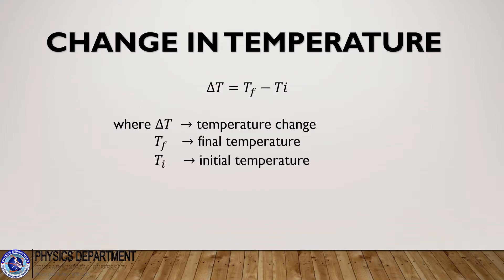Next, let's talk about change in temperature. When a body cools off or becomes hotter, then there will be a temperature change. And we denote temperature change as delta T, where delta T = T_f minus T_i, where T_f is the final temperature and T_i is our initial temperature. So what will be the consequences if there is temperature change?